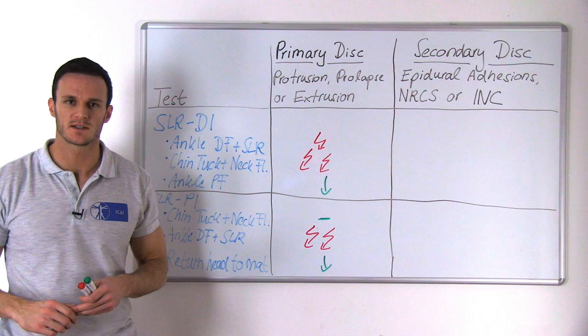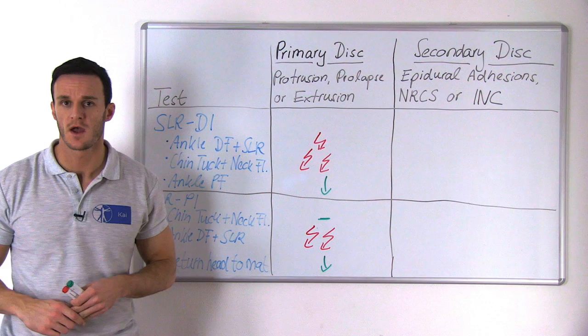In this case, provocation will occur due to loss of dural sleeve mobility associated with fibrosis or the compression of the nerve root's inflammatory focus. Imagine, for example...